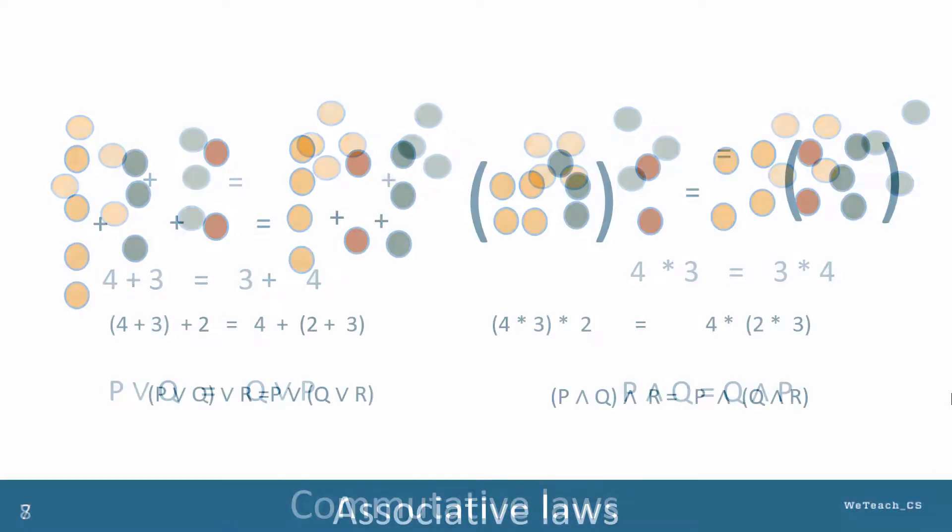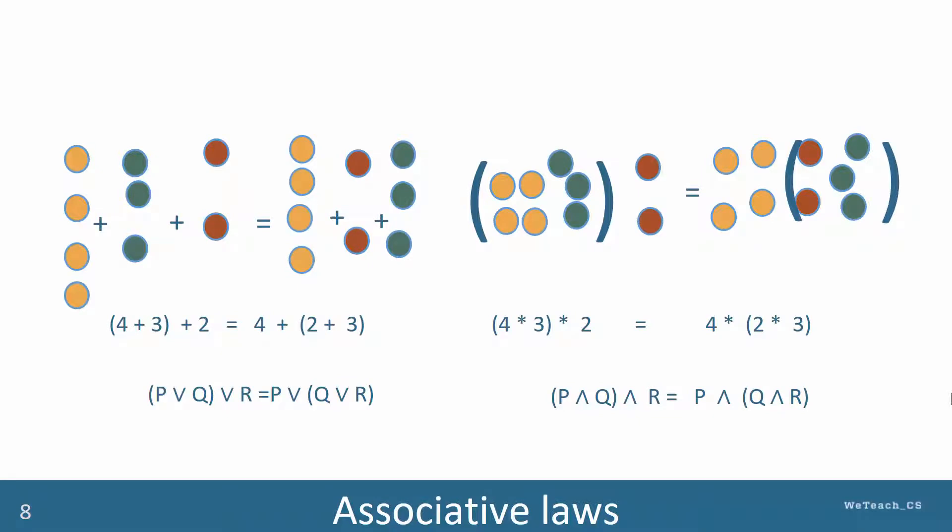Likewise, the associative law is similar in both mathematics and logic, illustrated here. When three operands are all involved in the same operation, you can start with the first two or the last two, and the result is the same.